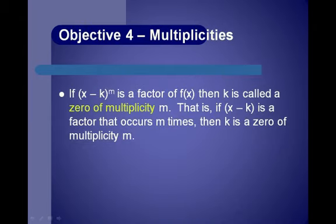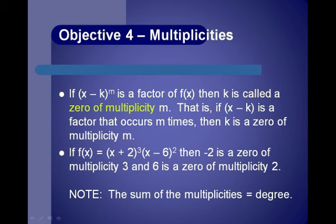Objective 4 is on multiplicities. If x minus k to the m is a factor of f of x, then k is called a zero of multiplicity m — that is, if x minus k is a factor that occurs m times, then k is a zero of multiplicity m. For example, if f of x equals x plus 2 to the third times x minus 6 squared, then negative 2 is a zero of multiplicity 3, and 6 is a zero of multiplicity 2.